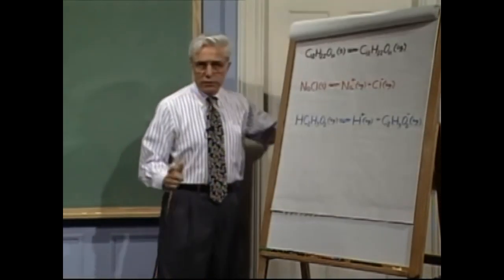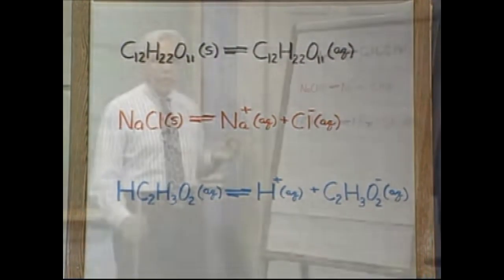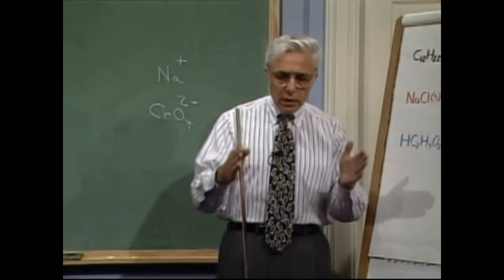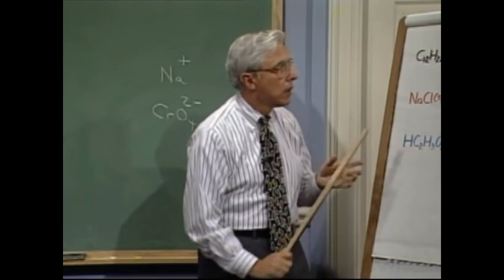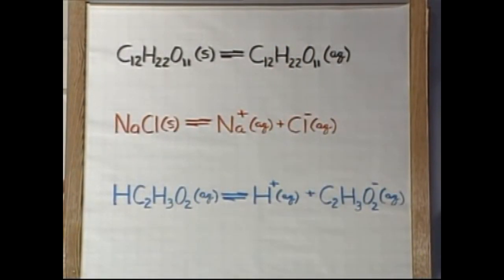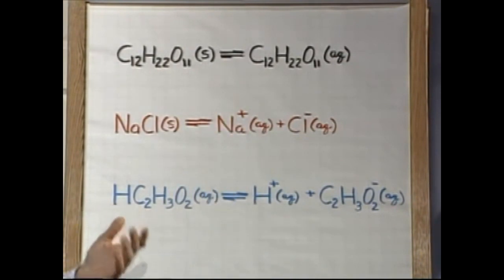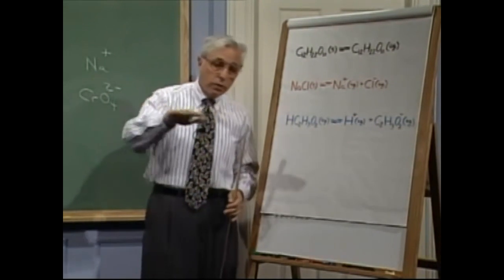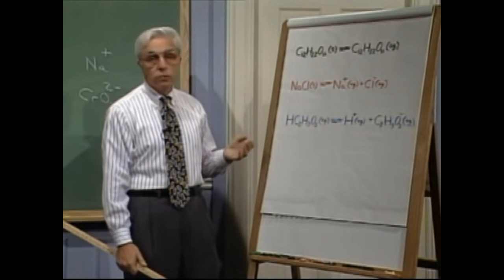Sucrose — sugar, common ordinary table sugar, C12H22O11 — is classified as a non-electrolyte. The reason is that something will conduct electricity only if it forms ions in solution. In an aqueous solution, conduction must be due to the movement of charged ions. When sucrose dissolves in water, it remains molecules — the molecules don't break apart into ions, they just stay together as sugar molecules. Since there are no charged particles, no ions, sucrose is a non-electrolyte. An aqueous solution of sucrose will not conduct electricity.